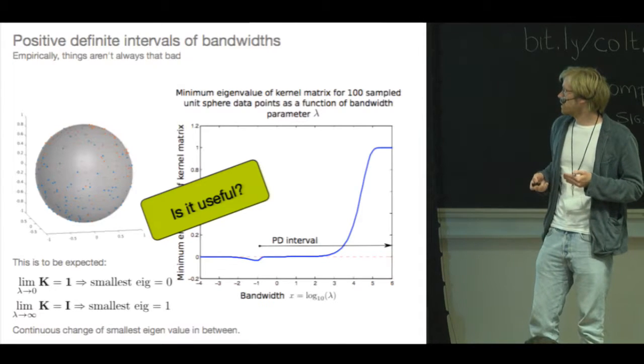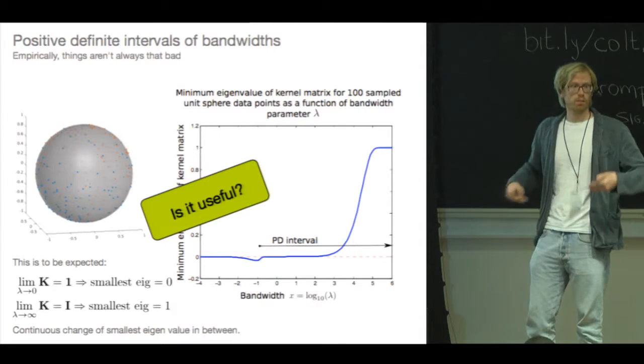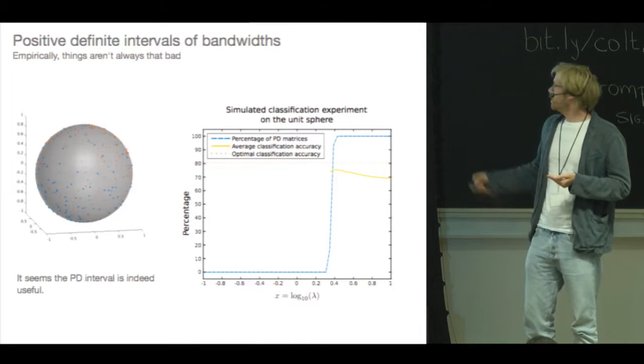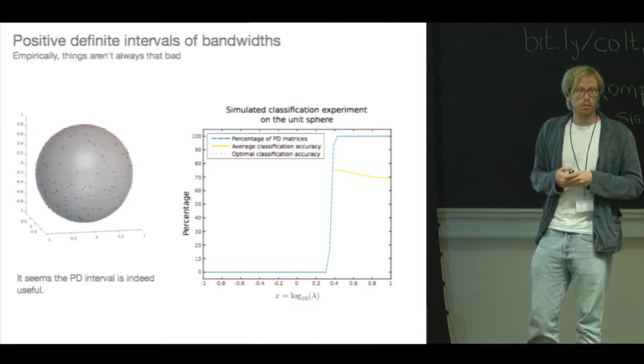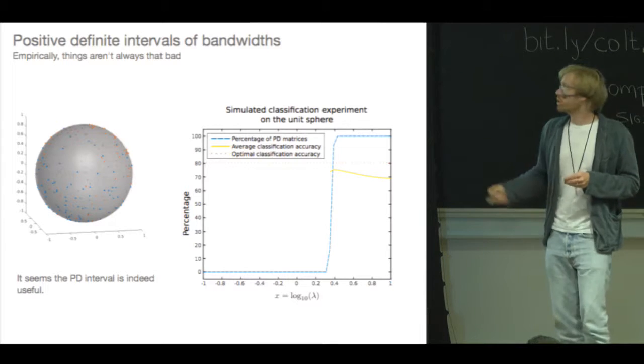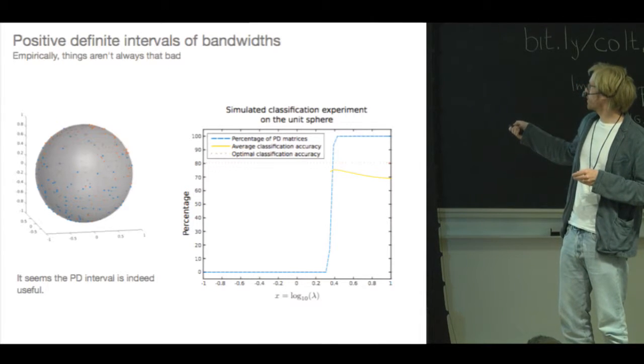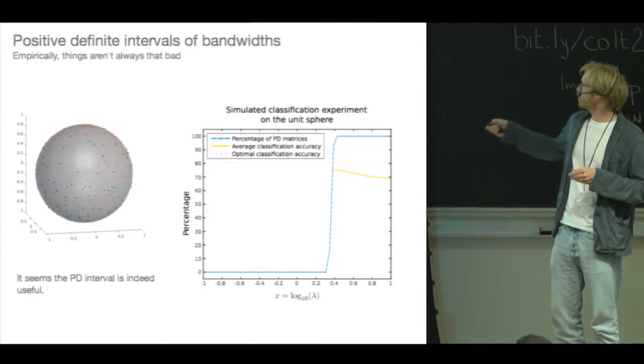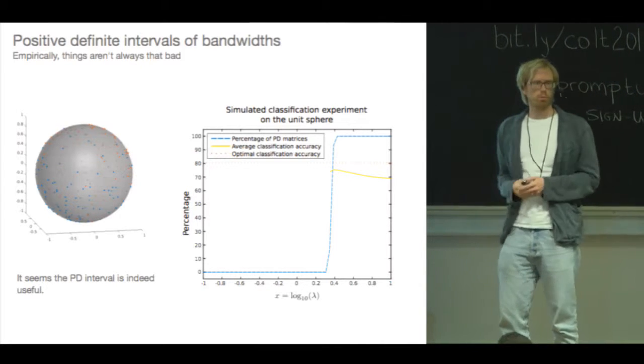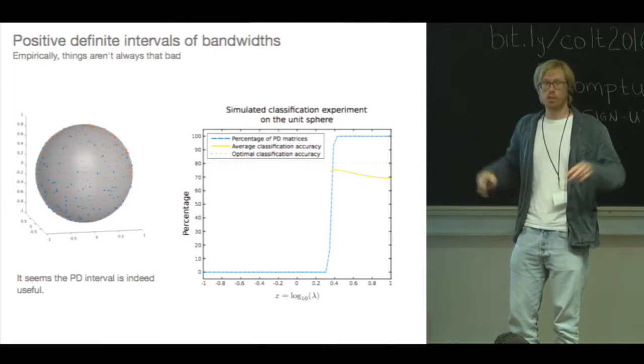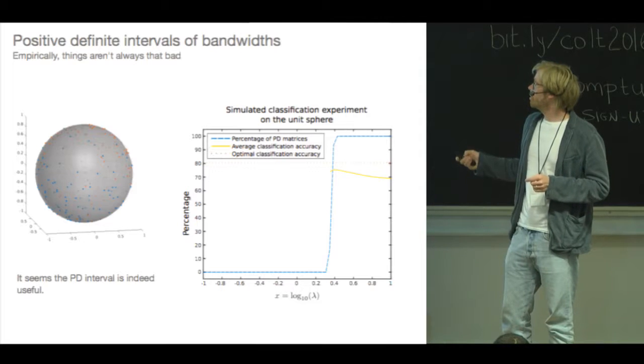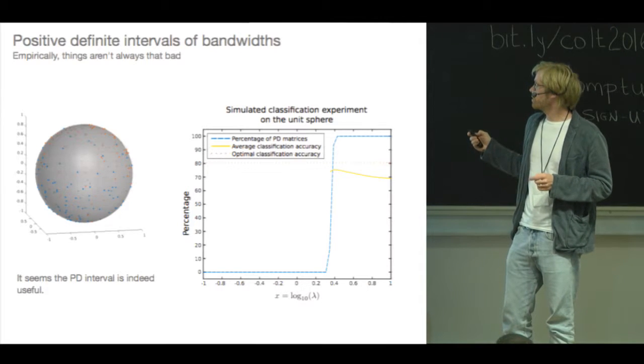So what we then sort of ask is, well, is such an interval useful? I mean, can you build useful classifiers and things like that? And so we just tried running a support vector machine on this data, but only running it when we actually get a positive definite kernel matrix. And what we see is, so this is the classification accuracy, and this is the accuracy of the optimal classifier. You can see that you sort of get a fairly decently performing classifier. So it would appear that there is a useful range of bandwidths where you still have a positive definite kernel matrix.